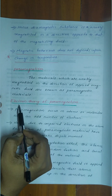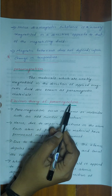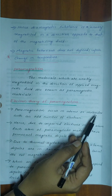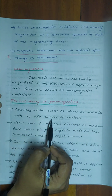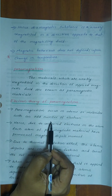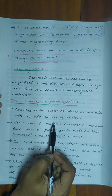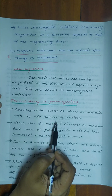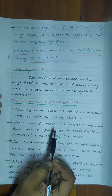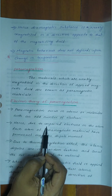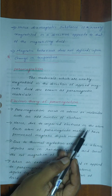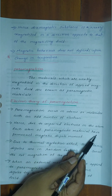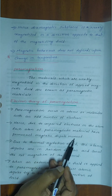Let's discuss the electron theory of paramagnetism. Paramagnetism occurs in atoms or molecules with an odd number of electrons. Due to unpaired electrons in the atom, each atom of paramagnetic materials has a permanent magnetic dipole moment.